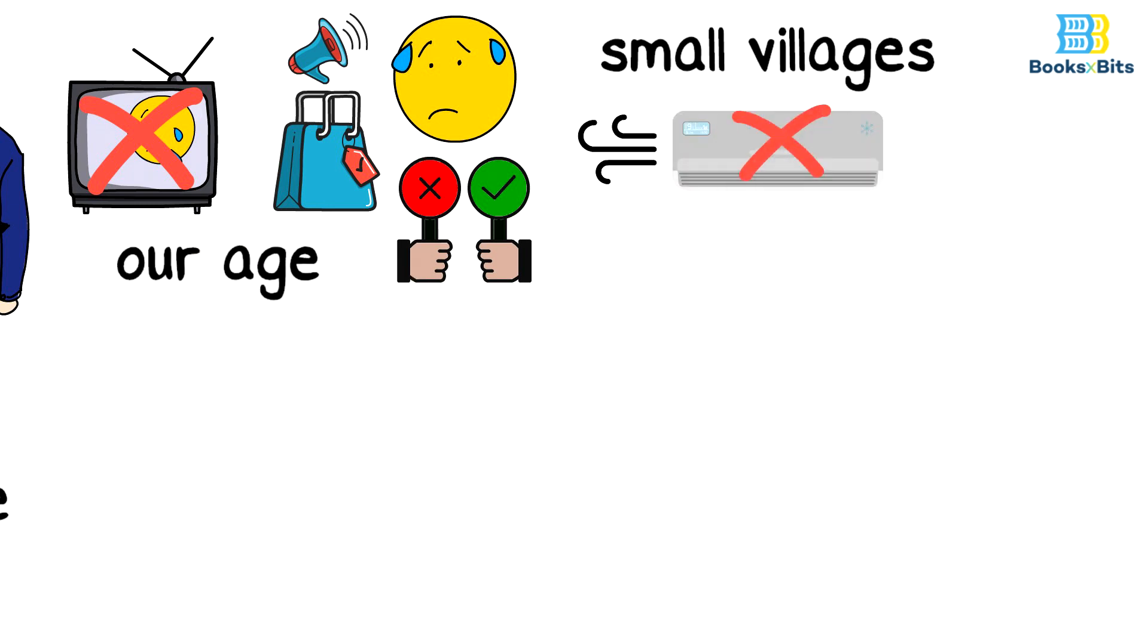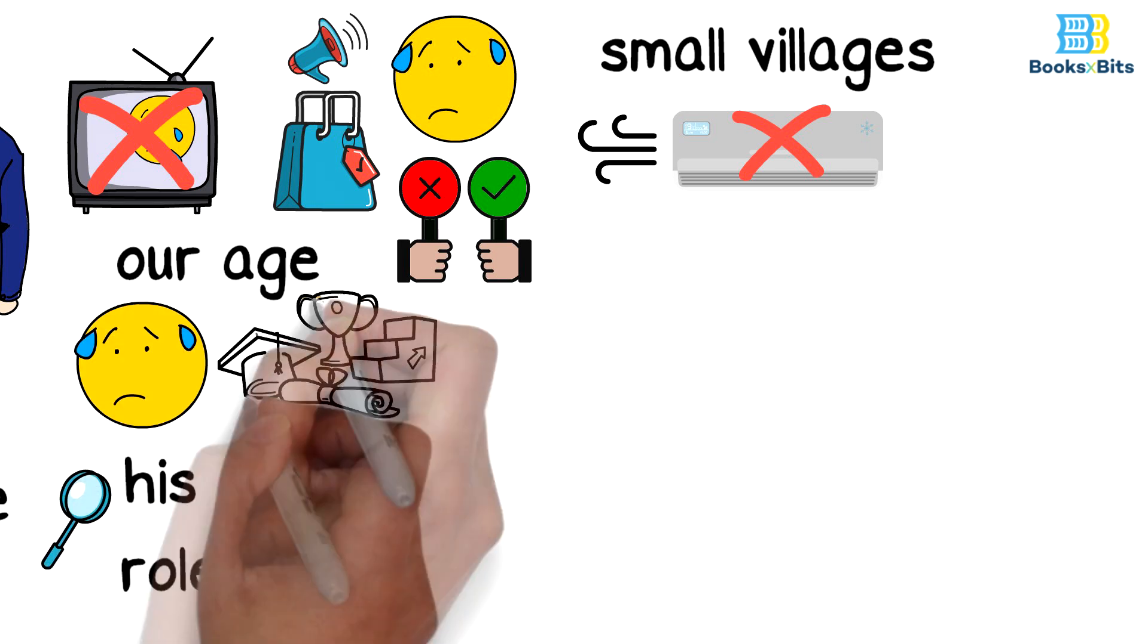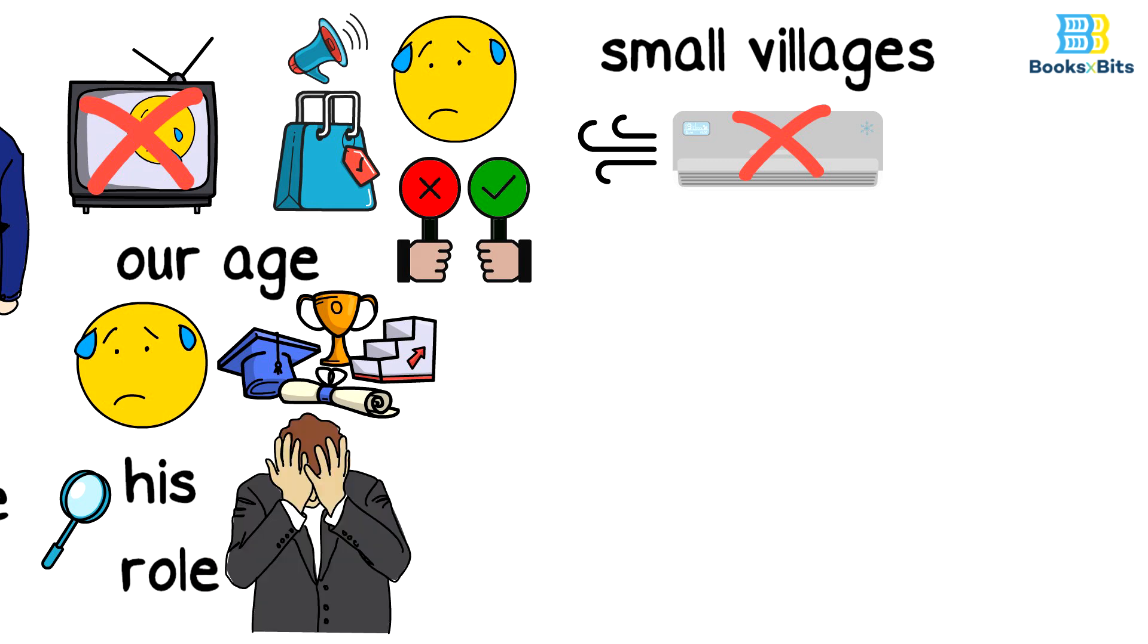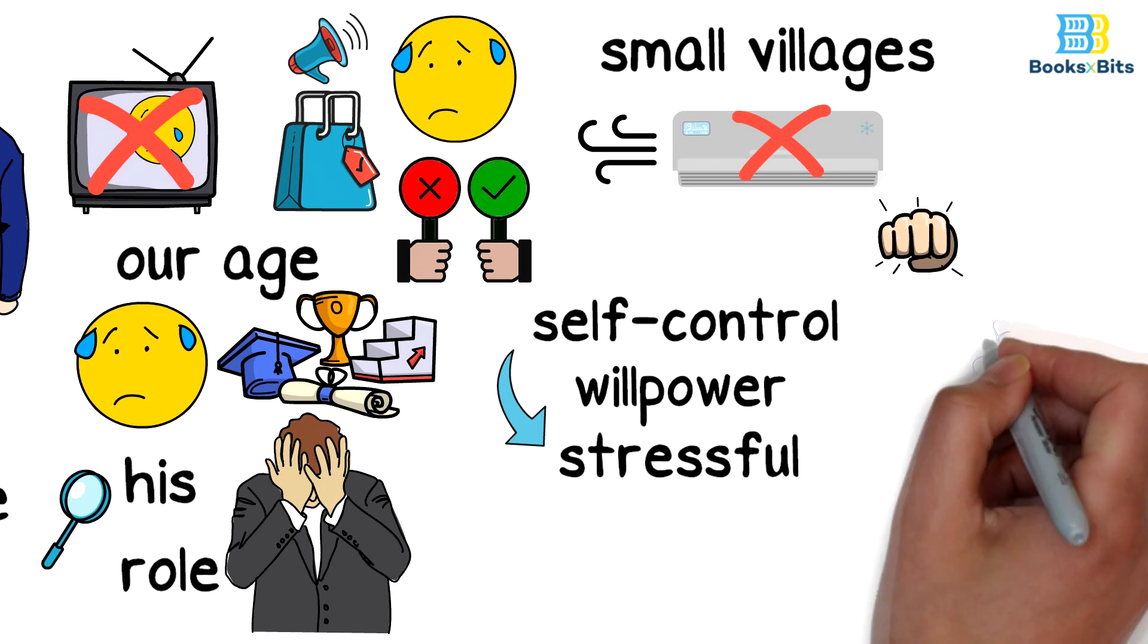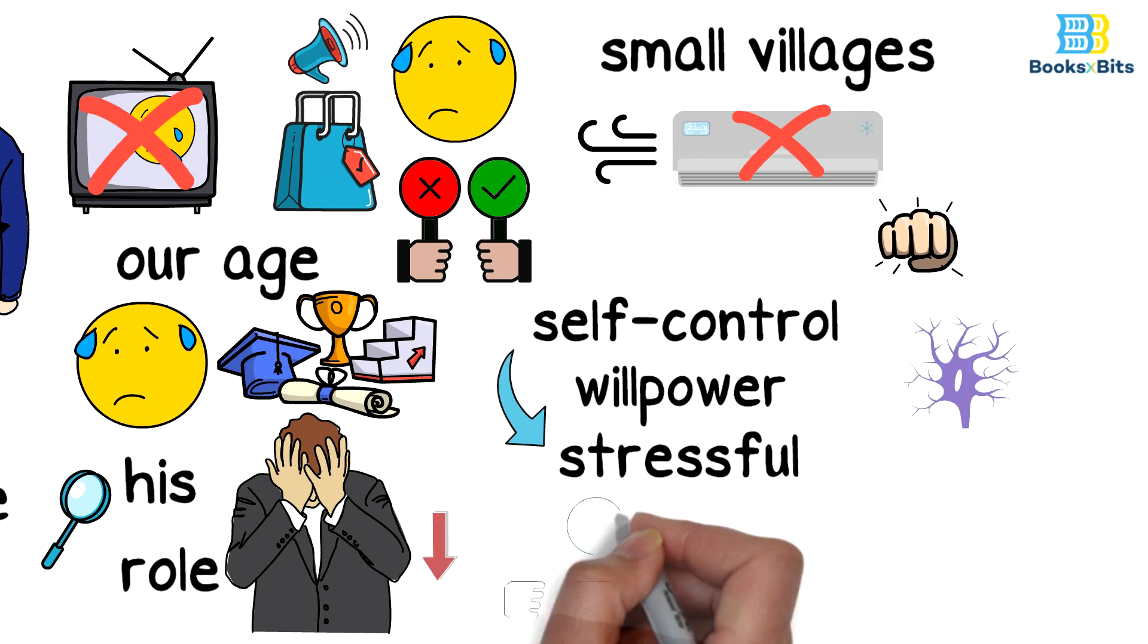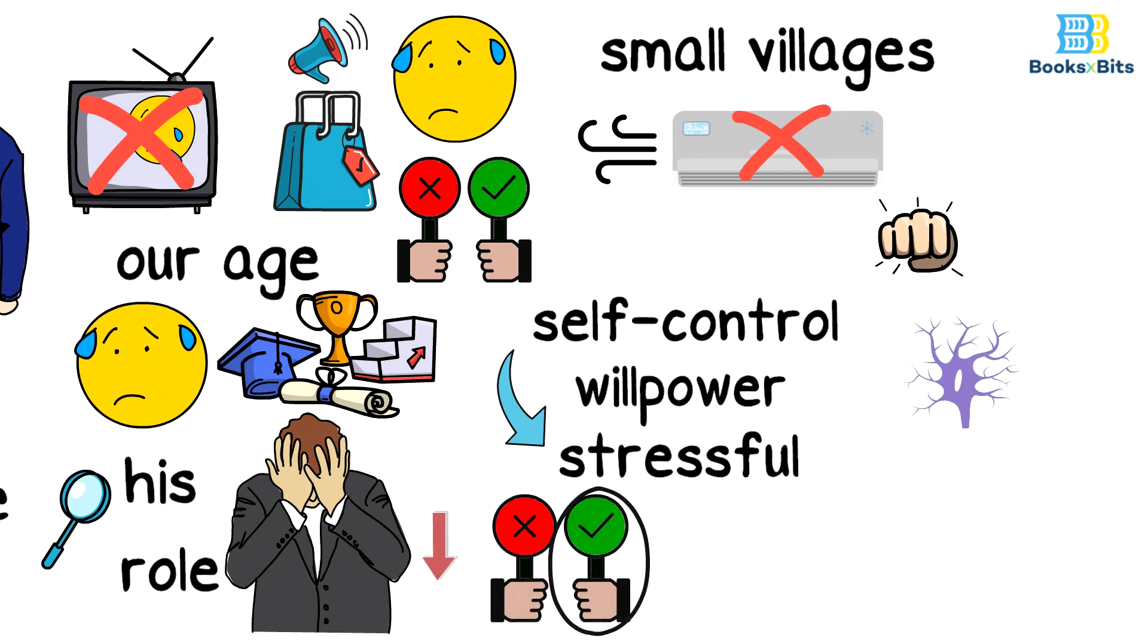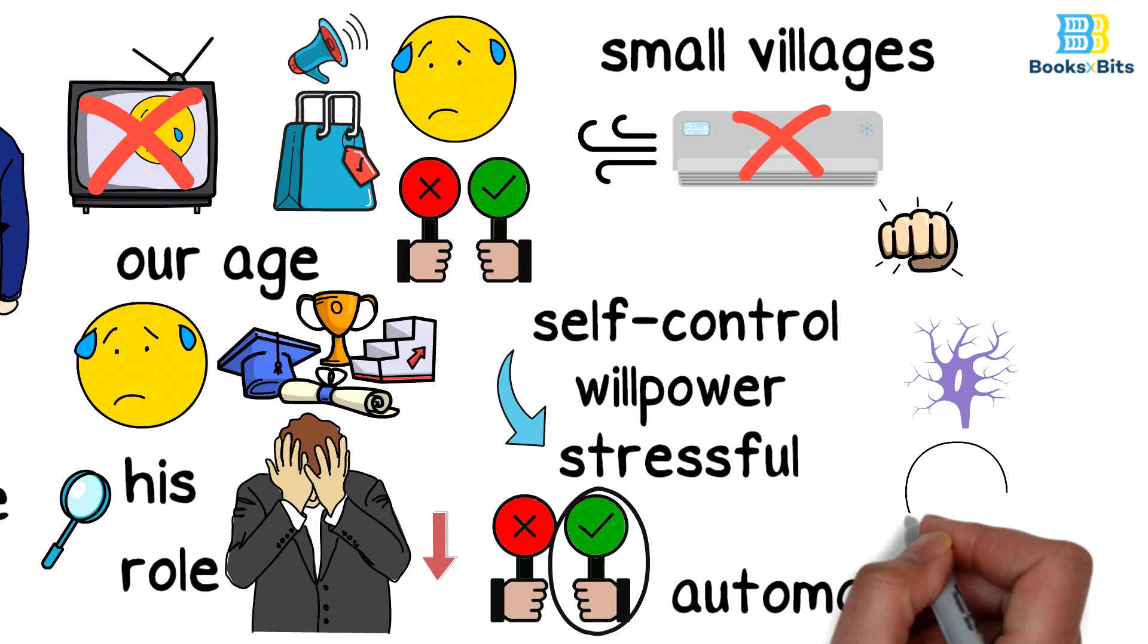As for our age, it is characterized by stress and exhaustion, as each individual searches for his role in life, and pursues his great ambitions until he becomes exhausted, to the extent that the idea of self-control and willpower becomes stressful. All that tension harms the nervous system and makes it less able to make the right decisions, and allows the automatic self to intervene in order to relax the mind.